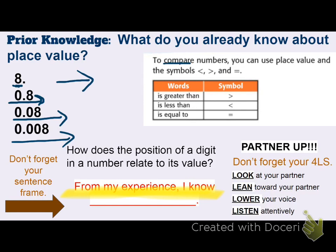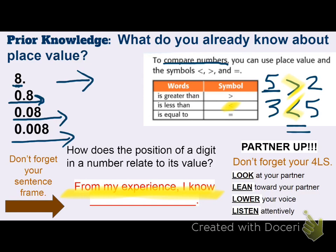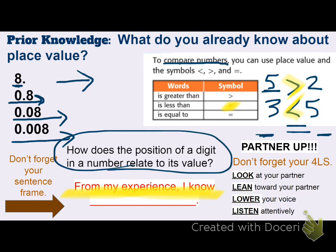I also know that when we compare numbers, we use symbols. We say greater than if the first value is greater than the second value. We use less than if the first value is less than the second value. And the last symbol we often use when comparing is the equal sign — meaning whatever is on the left is the same value as what's on the right. So the position of a digit in a number relates to its value, and the place value chart helps me figure out what's bigger and what's smaller.